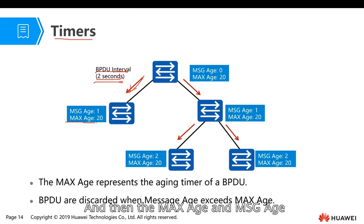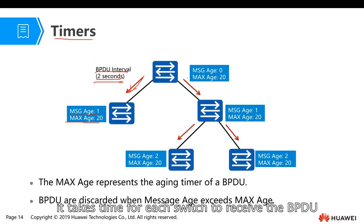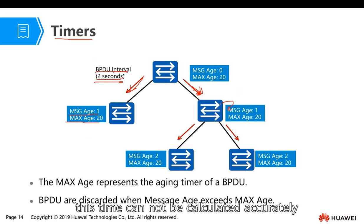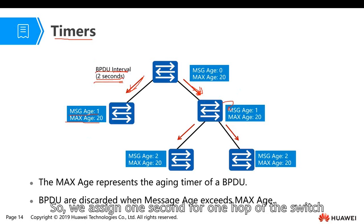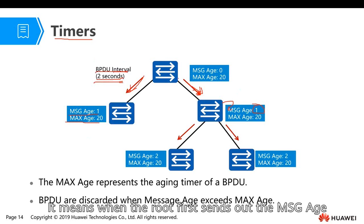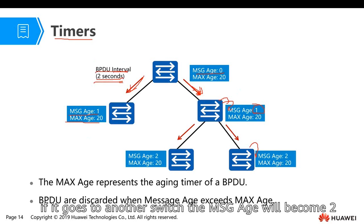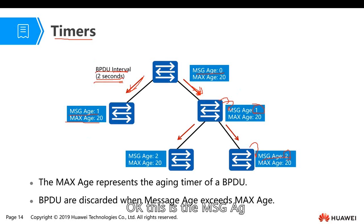The maximum age and the message age — the message age means each switch received the BPDU, processed it, and then sent it out, which needs time. Since this time cannot be calculated accurately, we just assign one second per hop of the switch. The root switch sends out the BPDU with message age zero. After one switch, the message age becomes one. After another switch, the message age becomes two.